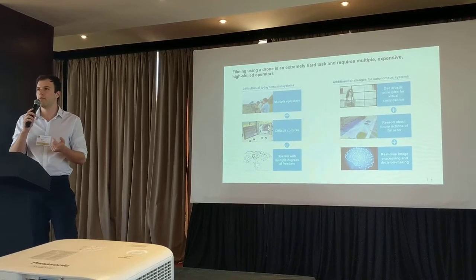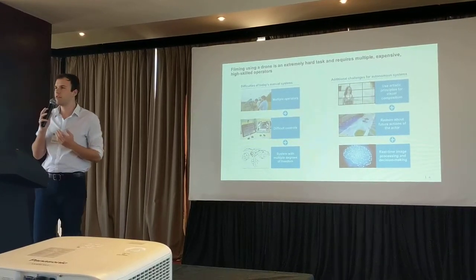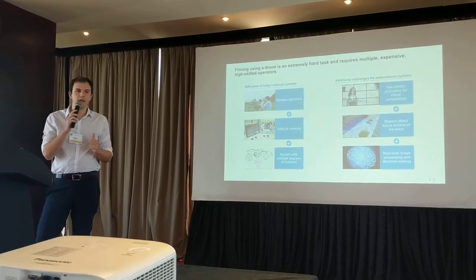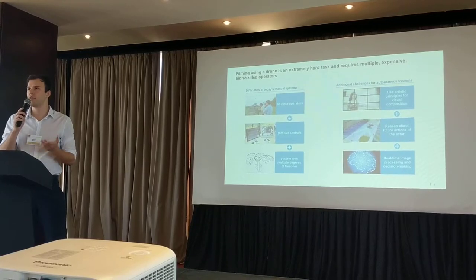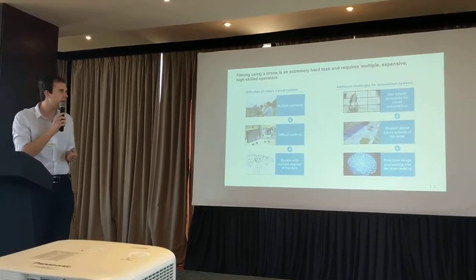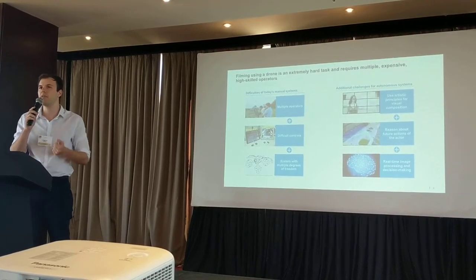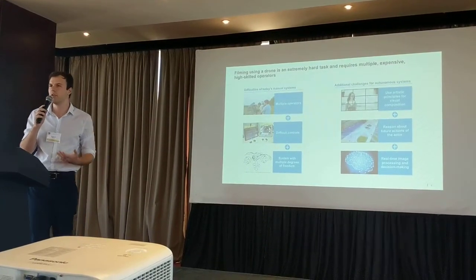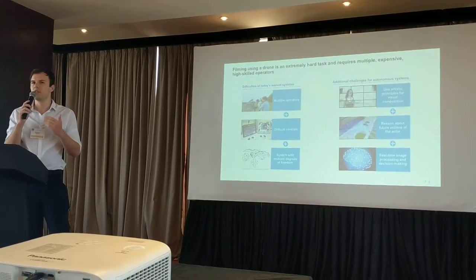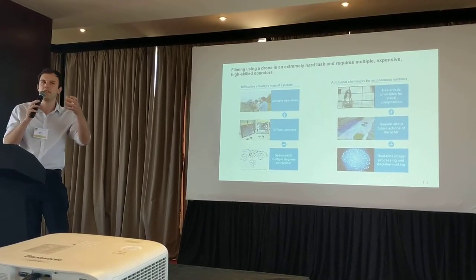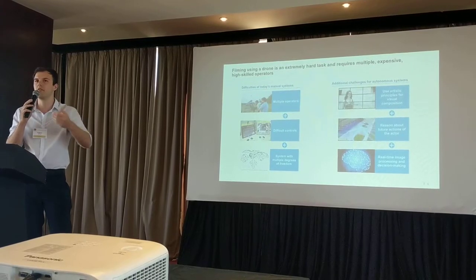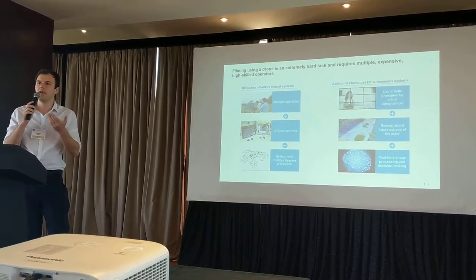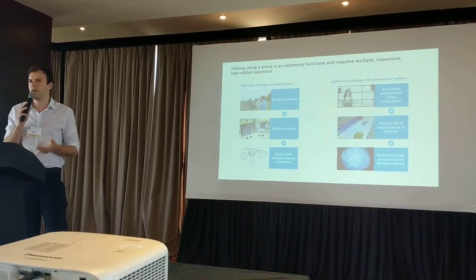Sometimes you can have up to two or three people controlling one drone, because the controls are very difficult — usually related to the attitude of the aircraft, not what you see on screen — and these systems have multiple degrees of freedom, so they are inherently hard to control. If you think of automating the act of filming using a drone, you have to incorporate artistic principles into the visual composition and motion plan, reason non-myopically about the actor's future position, and integrate all of this decision-making onto an onboard computer in real time.